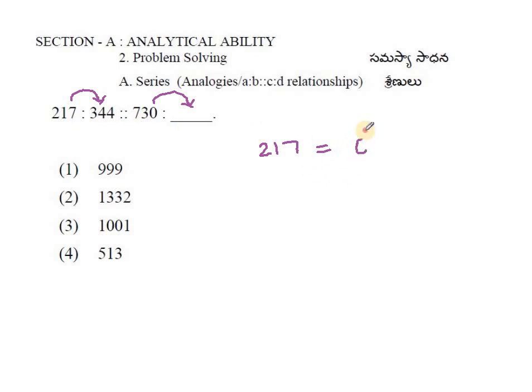217 is nothing but 6 cube plus 1. 6 multiplied by 6 multiplied by 6 equals 216 plus 1, which gives 217. The next in the series is 344, which is 7 cube, 343 plus 1.